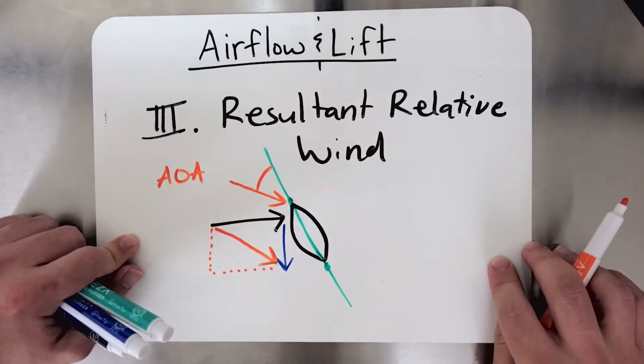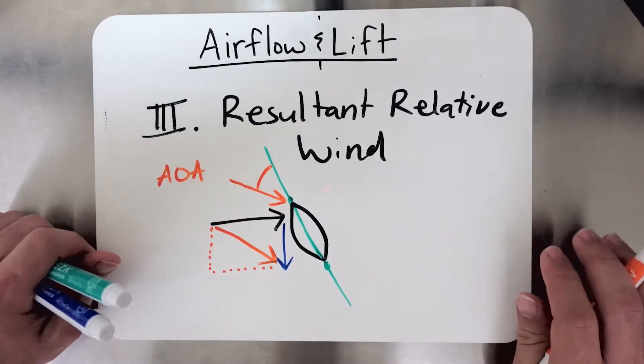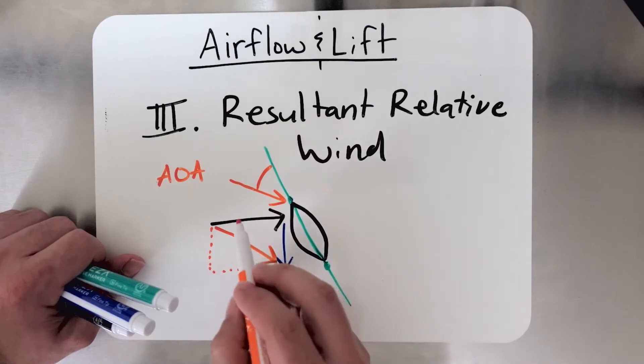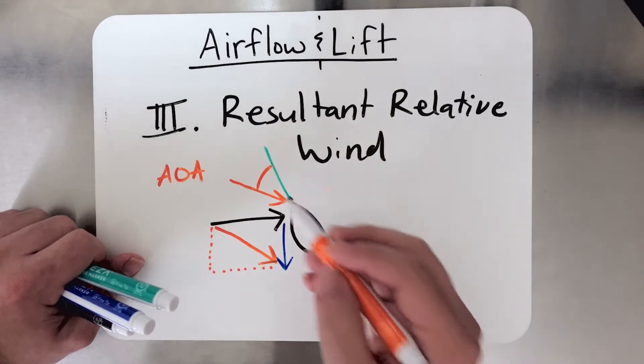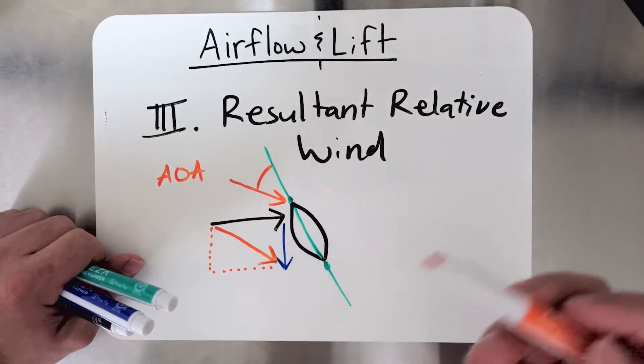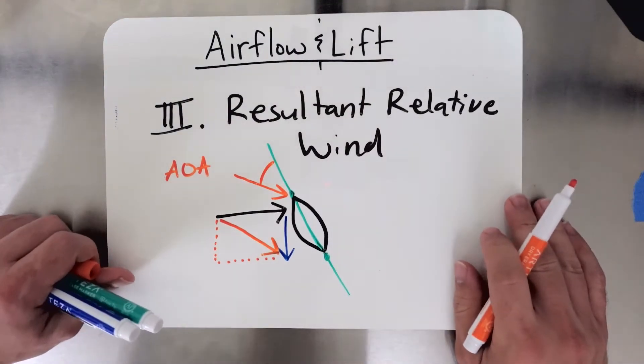Angle of attack, or AOA, is what actually produces lift. As the angle of attack increases, your lift increases up to a certain point, and we'll talk about that later. But so what you're seeing here is this resultant relative wind vector, when combined with the chord line, gives you angle of attack, which gives you lift.